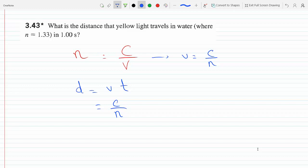So if we plug in the numbers, we get 3 times 10 to the 8 divided by 1.33 times 1. So d would end up being 3 times 10 to the 8 divided by 1.33.